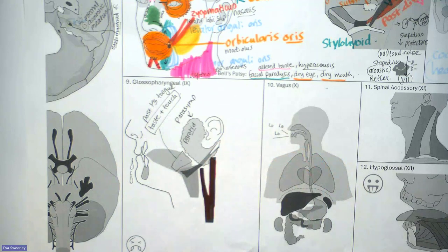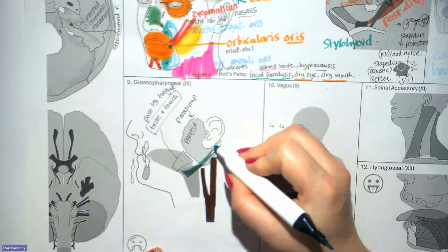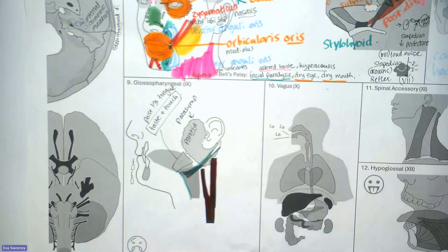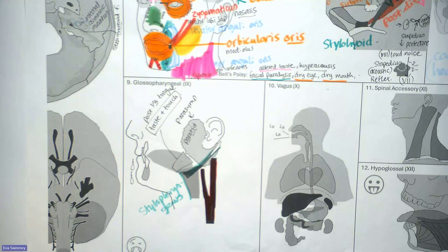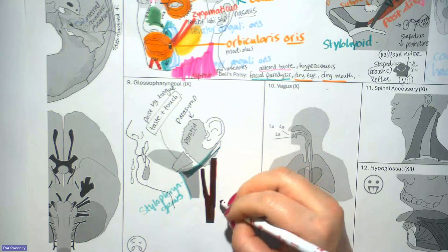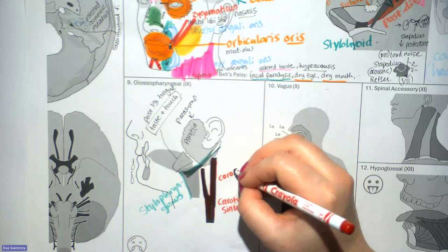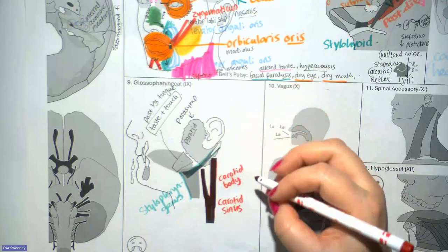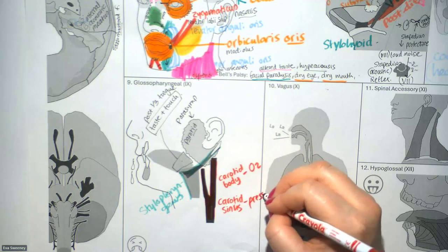The only muscle supplied by the glossopharyngeal nerve is the stylopharyngeus, which comes from the styloid process and blends with the pharynx. It is one of the longitudinal muscles of the pharynx that helps to elevate it. The glossopharyngeal also innervates the carotid sinus and carotid body near the bifurcation of the common carotid artery. These send information back about oxygen levels in the blood via chemoreceptors, and blood pressure via baroreceptors.